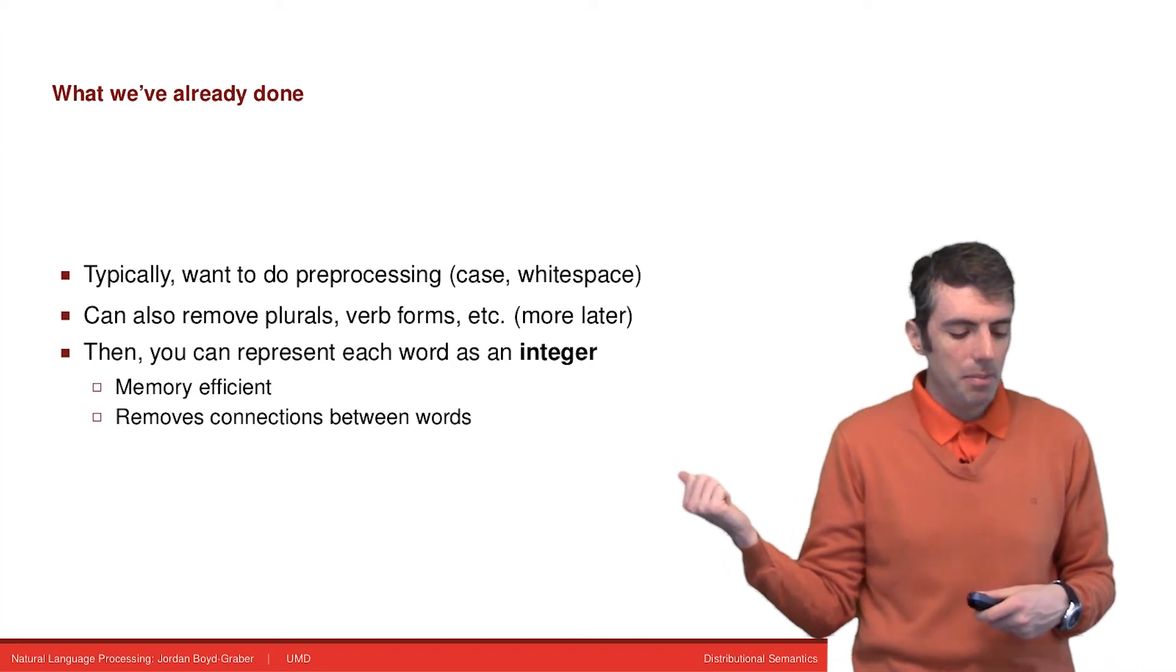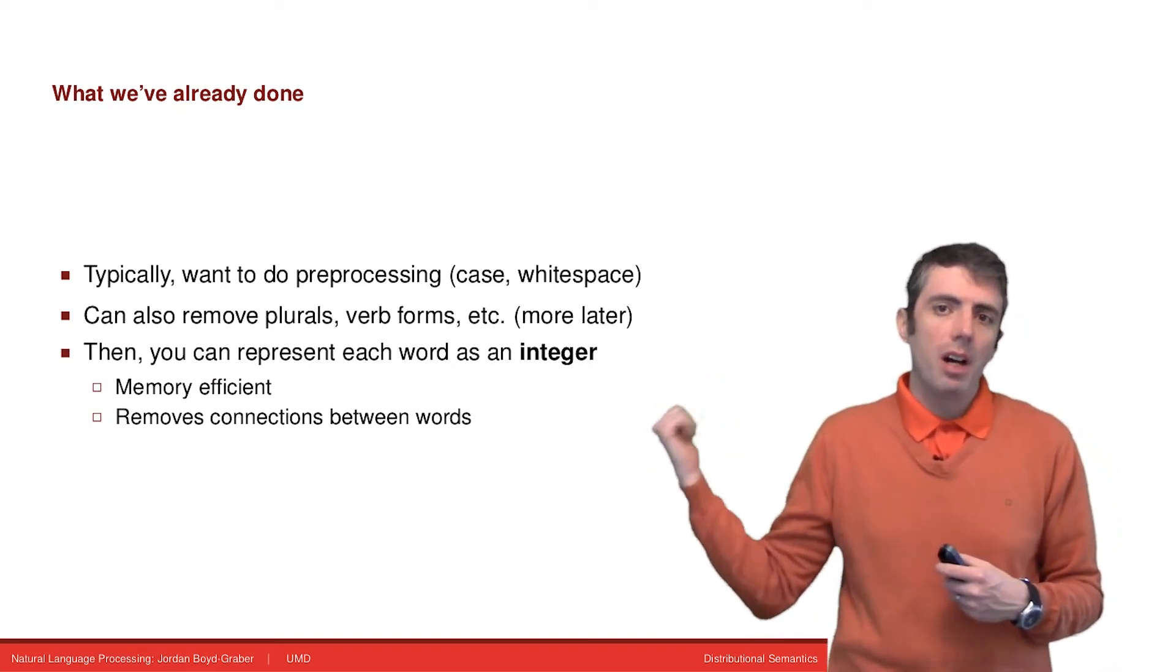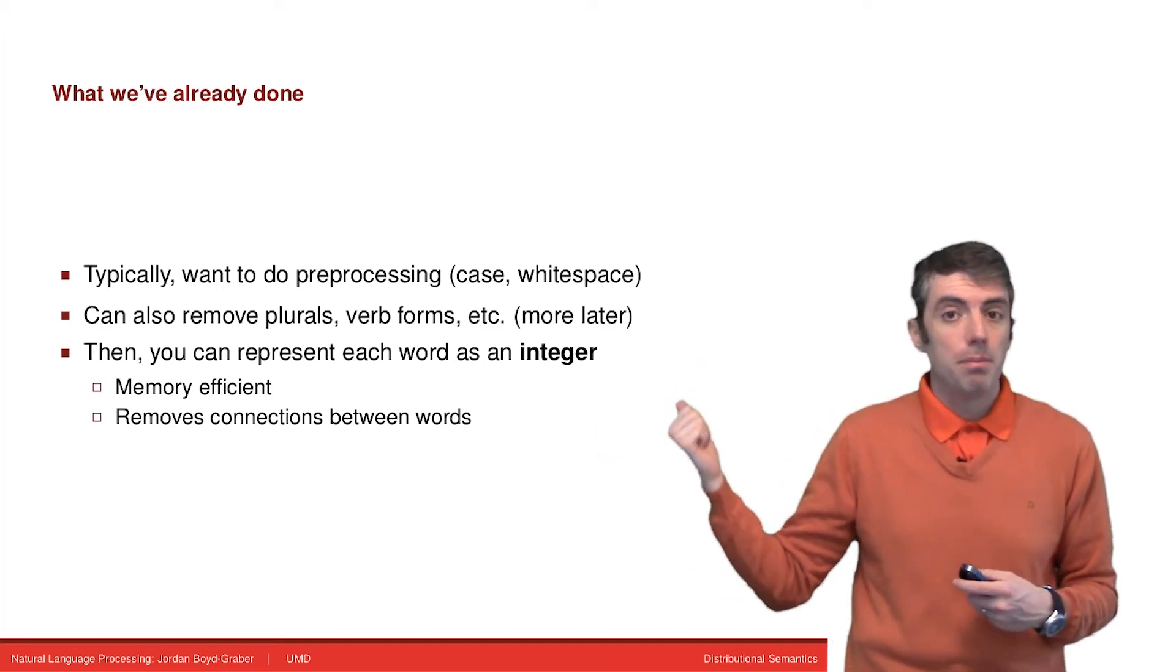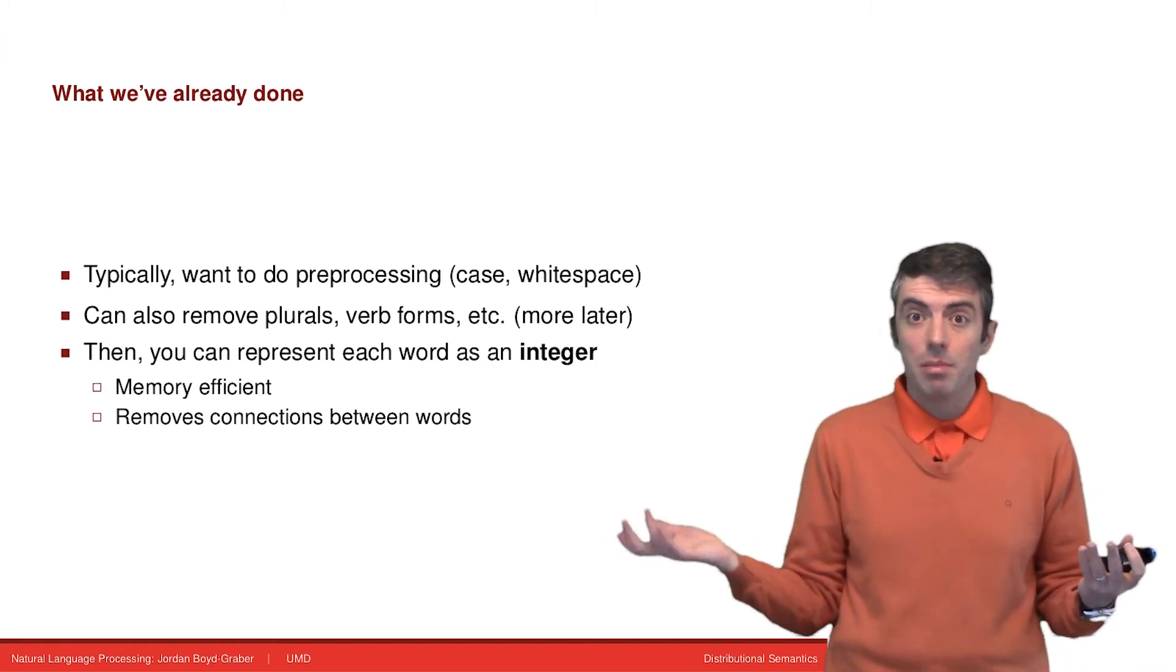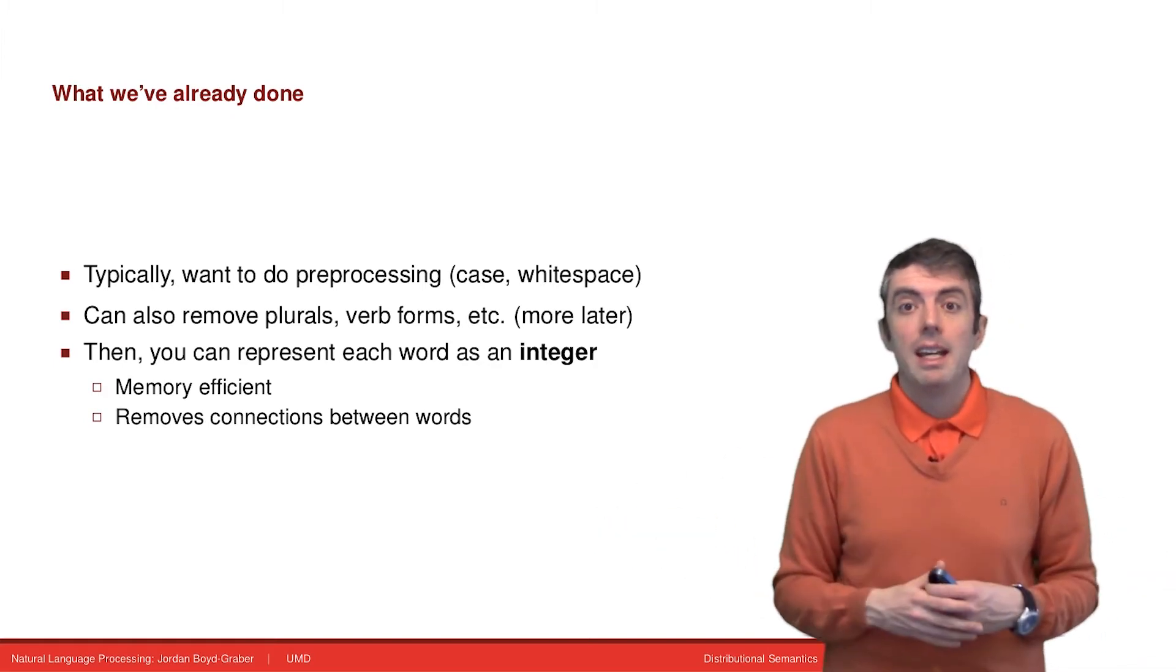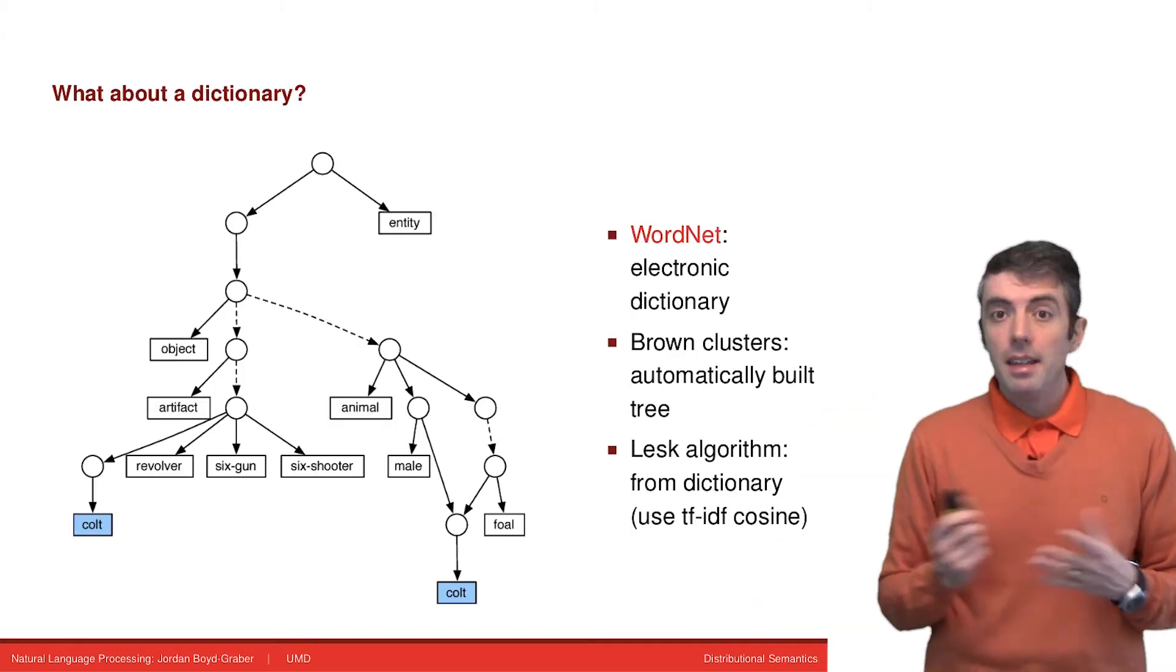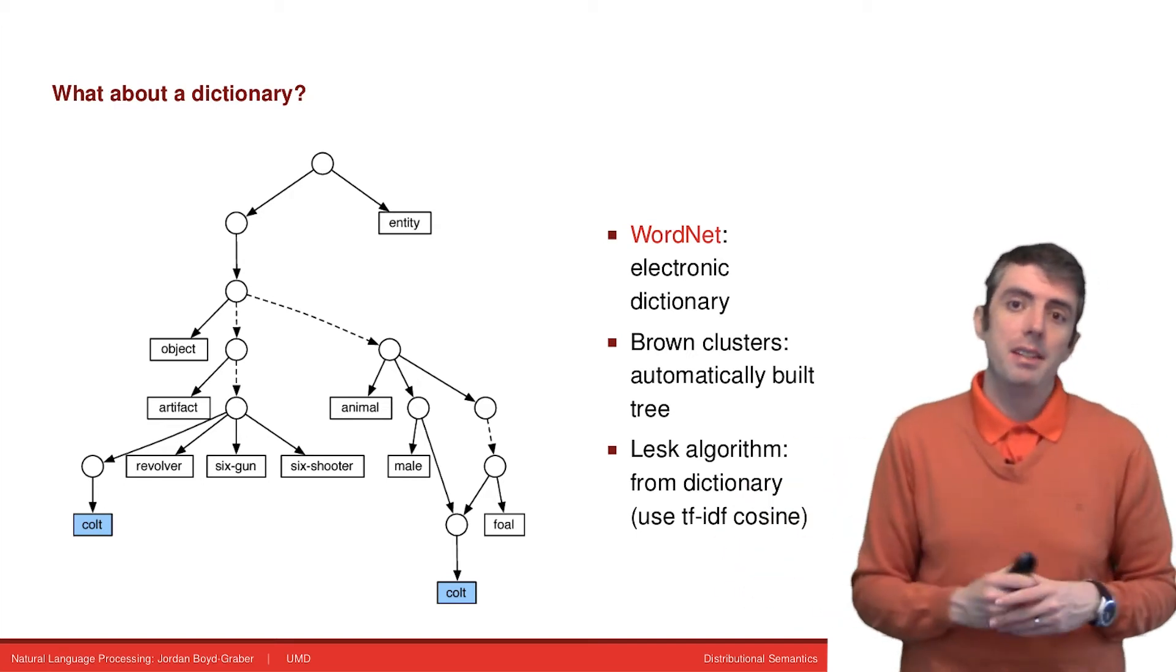There are good reasons you might want to do this, but maybe we might want to do something more. This is very memory efficient, but it removes connections between words. You might have dog becoming word 24601, and poodle becoming word 1701. What's the connection between those two numbers? In an integer representation, you lose out on that. In this class, we'll take a jump from integer representations to vector representations.